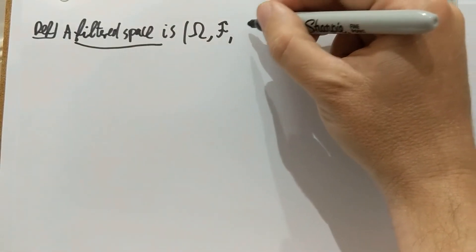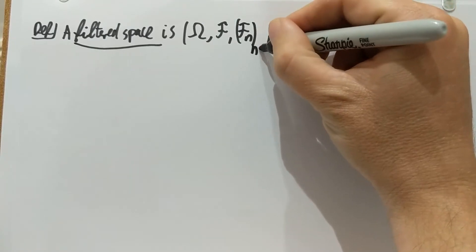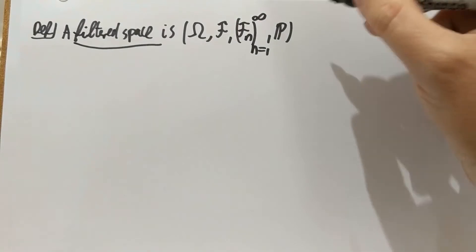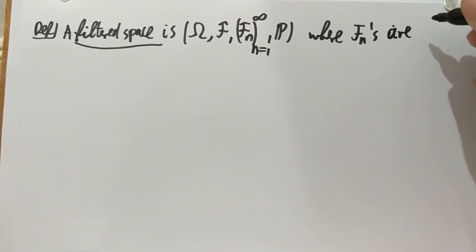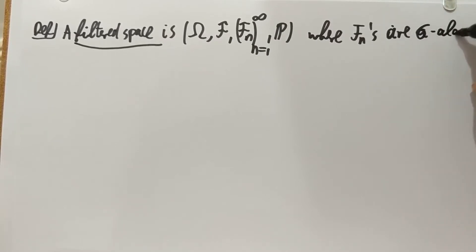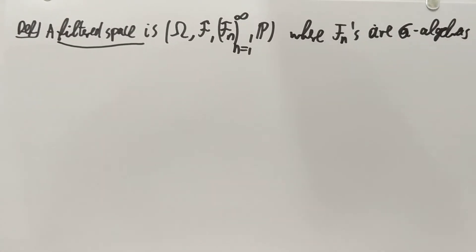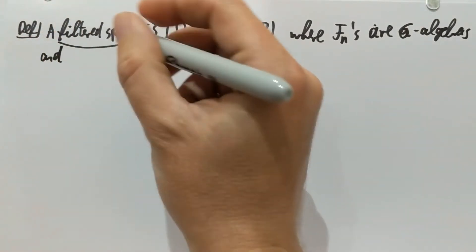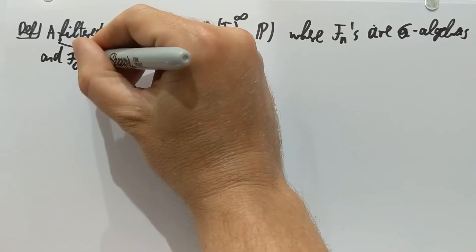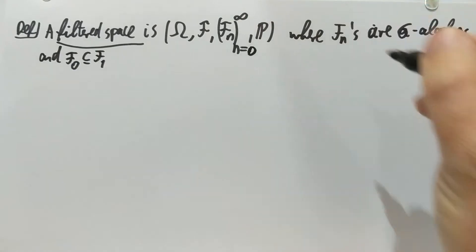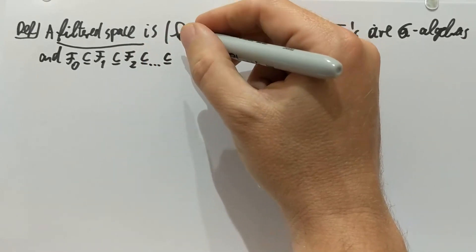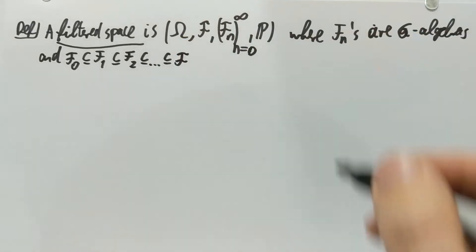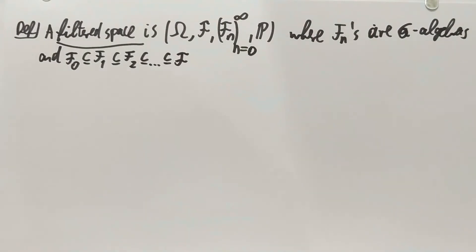What is missing from here is a system of sigma algebras, going from 0 through infinity, where each of the F_n's is a sigma algebra. And they are nested in the following sense: F_0 is a subset of F_1, F_1 is a subset of F_2, and so on. So I have an increasing nested sequence of sigma algebras, and each of these is a subset of my original sigma algebra F. That's a filtered space, or a filtration.